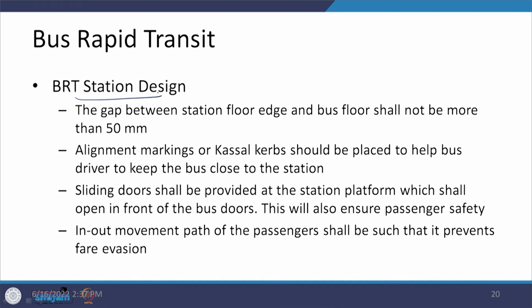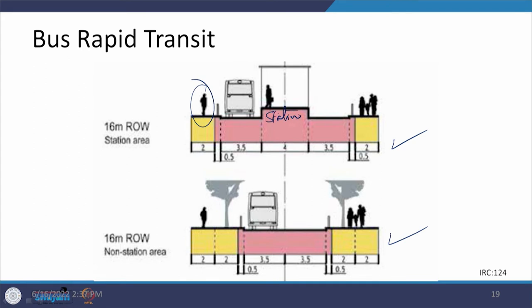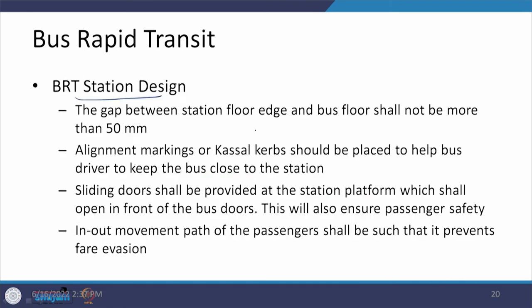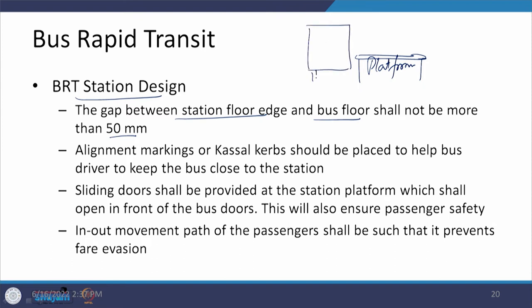For BRT station design, the gap between the station floor edge and the bus floor shall not be more than 50 mm. Alignment markings should be placed to help the bus driver keep the bus close to the station. Sliding doors should be provided at the station platform which shall open in front of the bus doors, requiring coordination of both types of doors so the driver must stop the bus in a very disciplined manner.